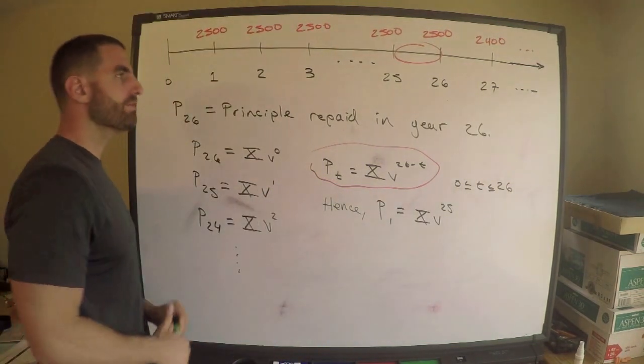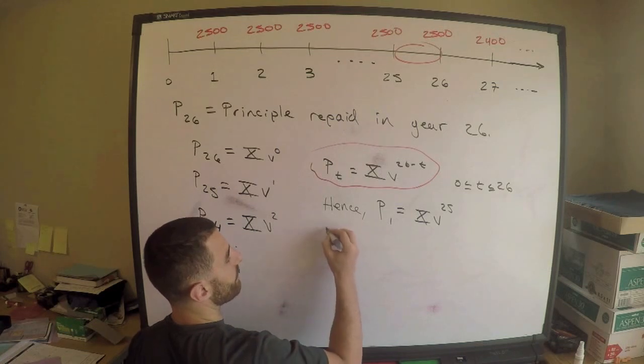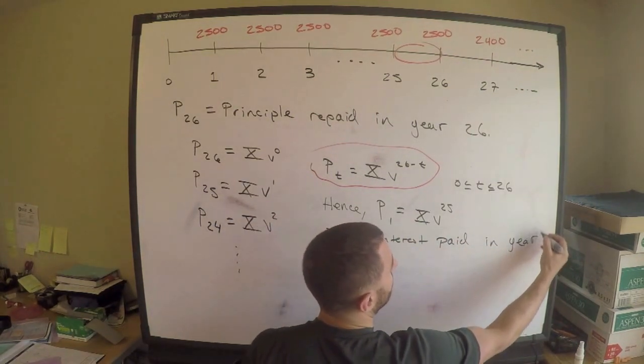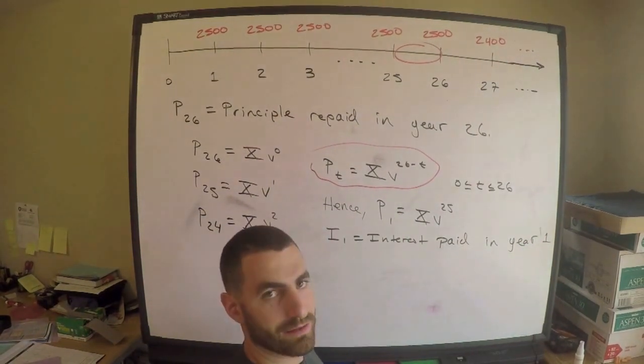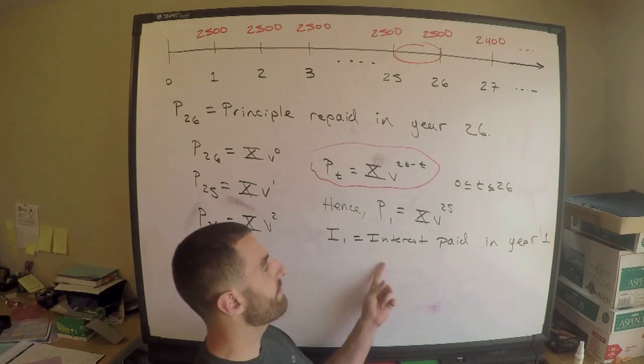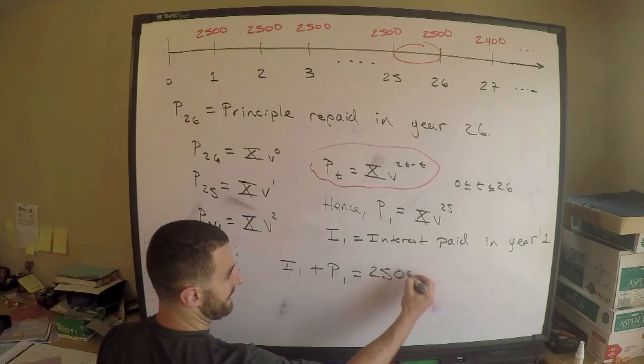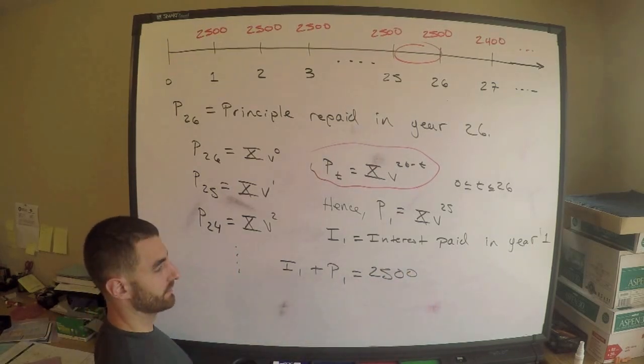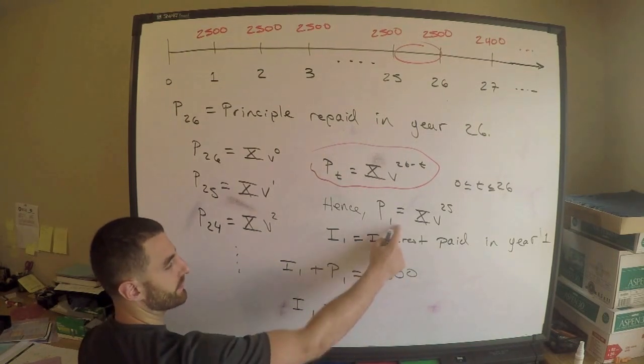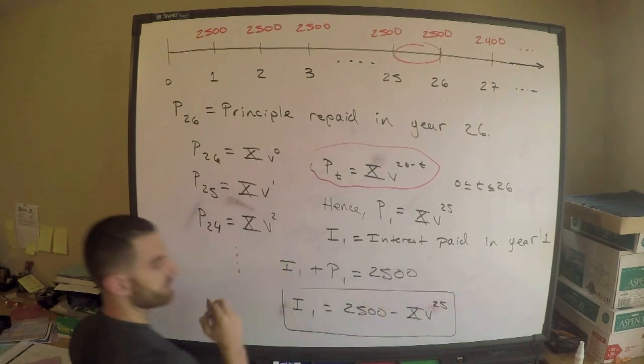What is the interest paid in year one? Think about this for a minute. There's so many different arguments for this kind of thing, but basically, the idea that I'm getting at is this. We know, let's just say, let's say I1 is the interest paid in year one. Then what? Think about this for a second. Whatever your payment is, in our case it's 2500 for year one, whatever your payment is, that's equal to how much interest you paid, how much of that payment was interest, and how much of that payment was principal. So in other words, the interest in year one plus the principal in year one is how much I paid, how much my payment was in year one. We're interested in I1, well then, I1 is equal to 2500 minus P1. Here's P1, so it's 2500 minus XV^25, and that is my answer.